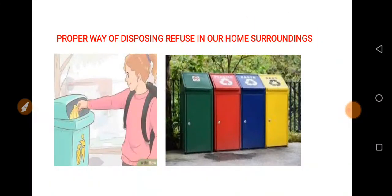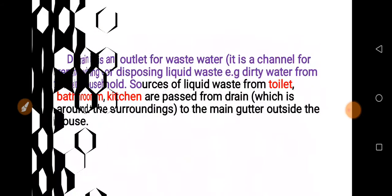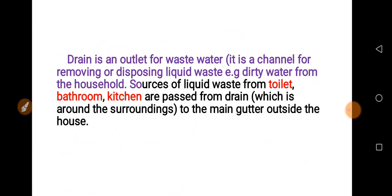We discussed the proper way of disposing of refuse in our home surroundings — that we should always ensure we drop our waste inside the bin. We also discussed about drains. A drain is an outlet for waste water; it is a channel for removing or disposing of liquid waste from the toilet, bathroom, and kitchen, passing through drains around the surroundings to the main gutter outside the house.